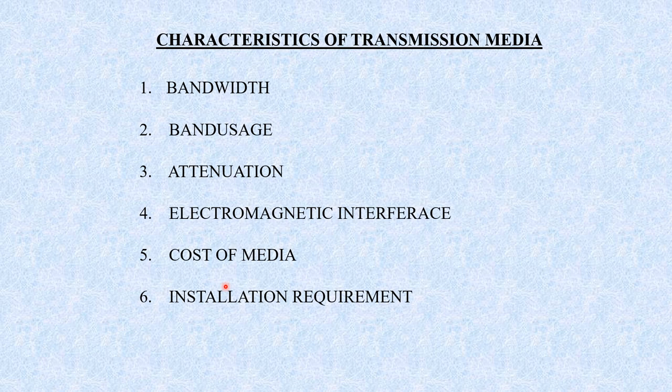Characteristics of a transmission media — a very important topic from the exam point of view. Transmission characteristics of the media affect communication quality. The characteristics are: bandwidth, band usage, attenuation, electromagnetic interference, cost of media, and installation requirement. Now, bandwidth is the range of frequencies within which the channel operates. The bandwidth is the difference between the highest frequency (F2) and the lowest frequency (F1) — that is, bandwidth equals F2 minus F1. Bandwidth is the data carrying capacity of the channel.